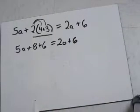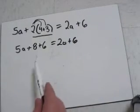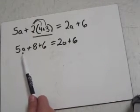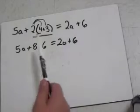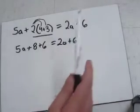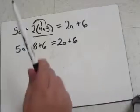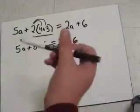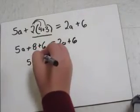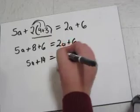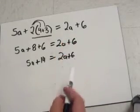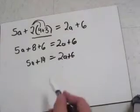And from here, we will start combining like terms. And like terms are variables with the same coefficient, or constants. Right now, do not worry about the equal sign. Start by combining eight and six, which will give you 5A plus 14 is equal to 2A plus 6, because nothing on this side of the equal sign can be combined. There are no like terms.